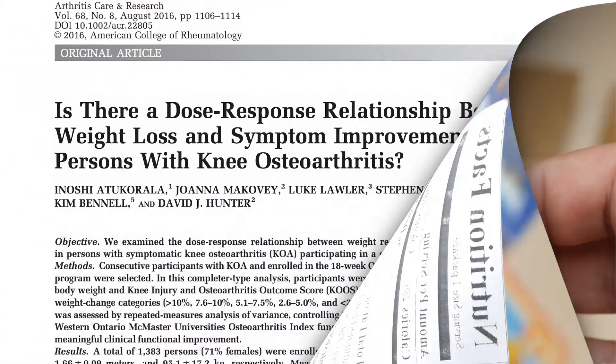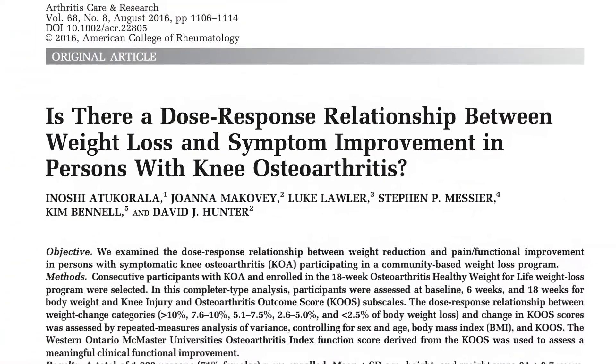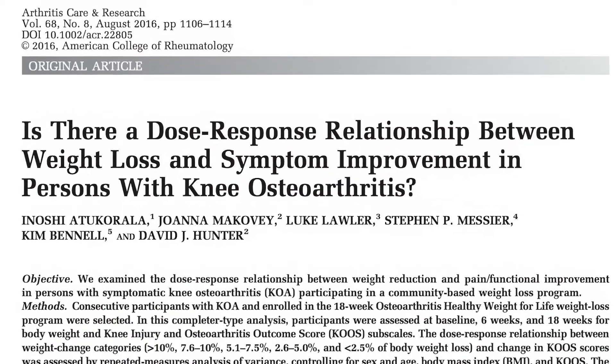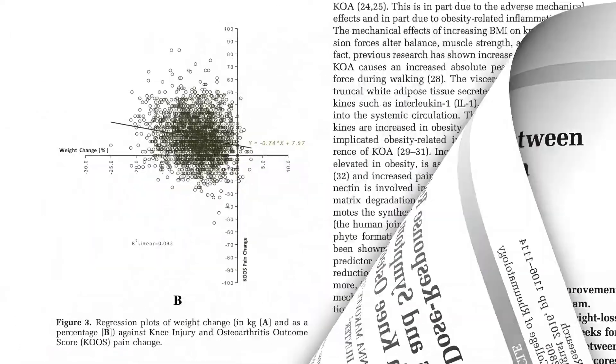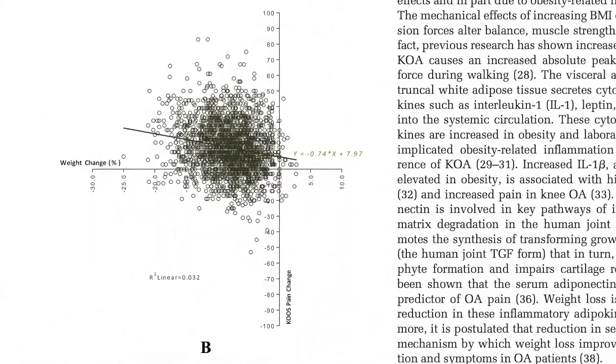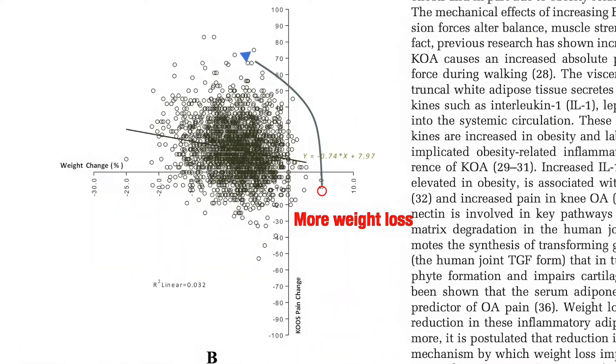Individuals who are overweight or obese should be provided with dietary advice, as weight loss of around 10% of body weight is associated with improved pain and function and might reduce the progression of structural damage. For those with knee OA, obese individuals attempting to lose weight should be encouraged that there is a dose-response relationship between their symptoms and the amount of weight loss they achieve.